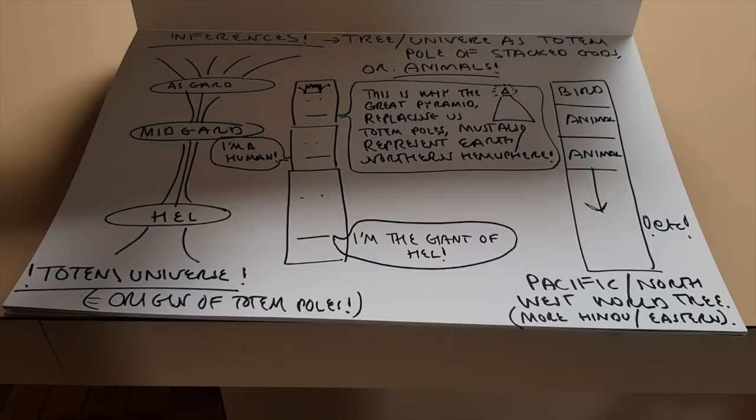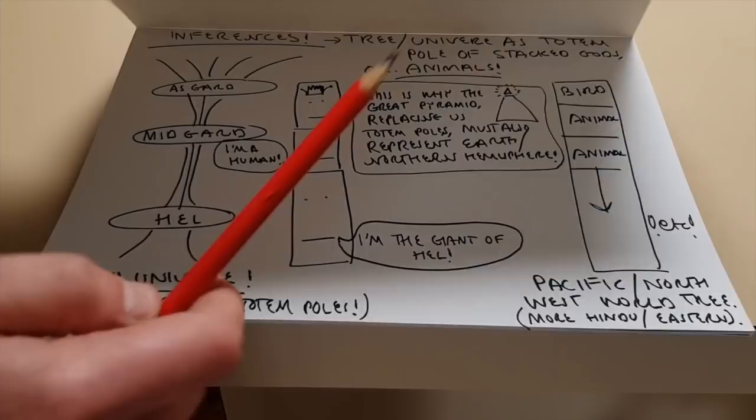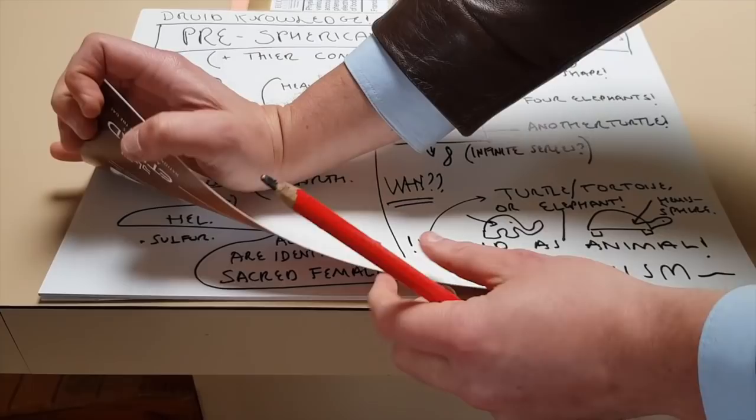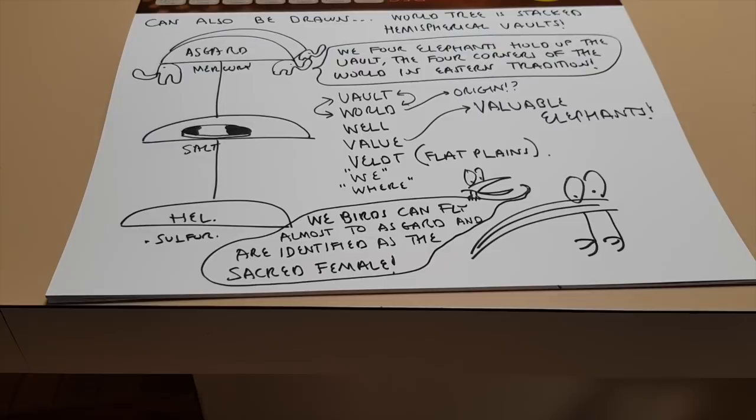And then animal, animal, animal, animal stacked. Just like the stacking here, which goes on for an infinite series, possibly. And with the on top of World Tree is the bird. That's why the bird is on top of the American totem pole. Which means that the totem pole is the whole universe.